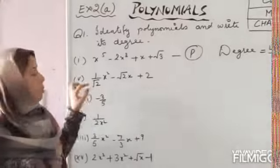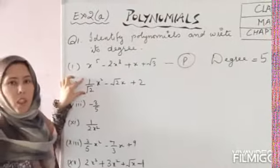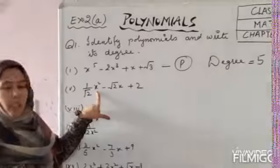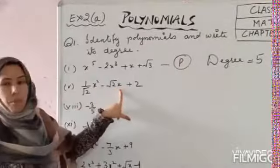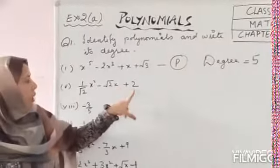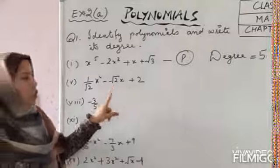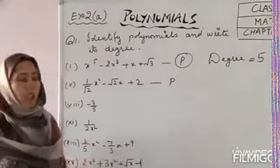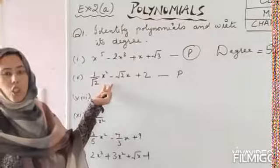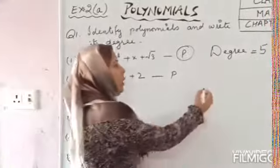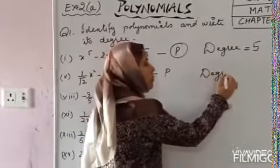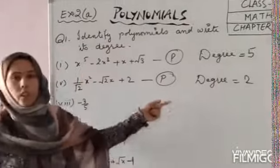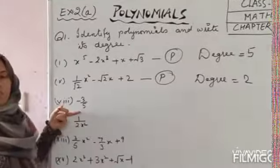Next: 1/2 is an irrational number but it can be a constant. Here x has power 2, and here x has power 1, and both are constants. So it is also a polynomial and its degree is 2. Next: only a constant number is written, so it is a constant polynomial with degree 0.